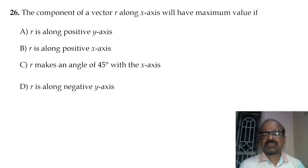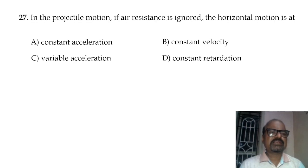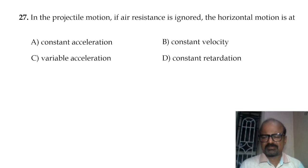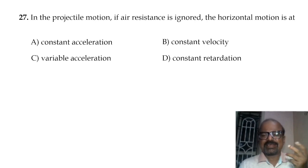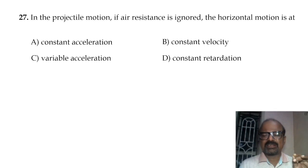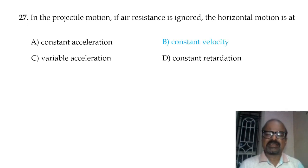A vector is along the positive x-axis. Next, in projectile motion if air resistance is ignored, the horizontal motion of the projectile is at constant velocity, since horizontal acceleration is zero.